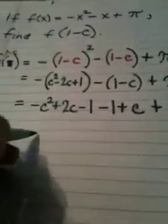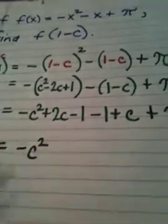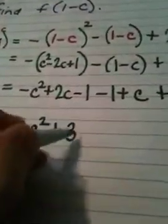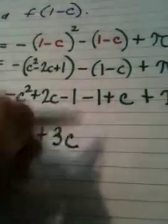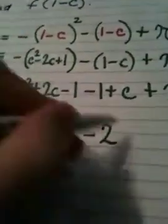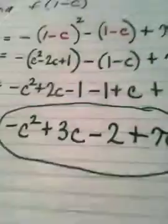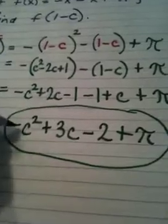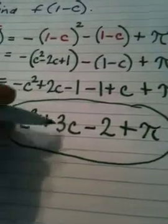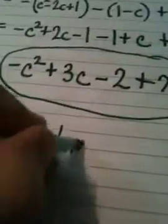When I collect like terms, at the beginning I have the opposite of c squared, a 2c and a c is a plus 3c, minus 1 minus 1 is a minus 2, and we pick up a plus pi. So, my answer is strange as all get out, but there it is. Opposite of c squared, plus 3c, minus 2 plus pi, and we are done.